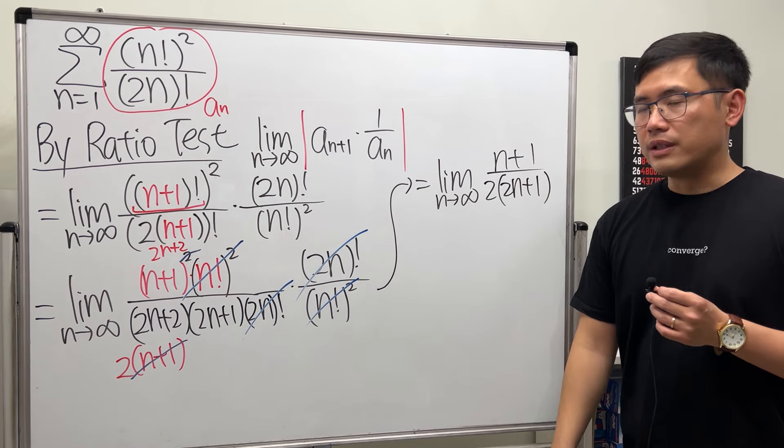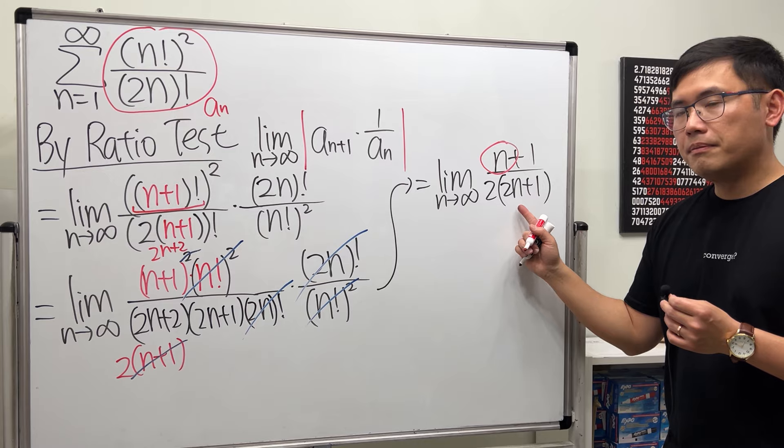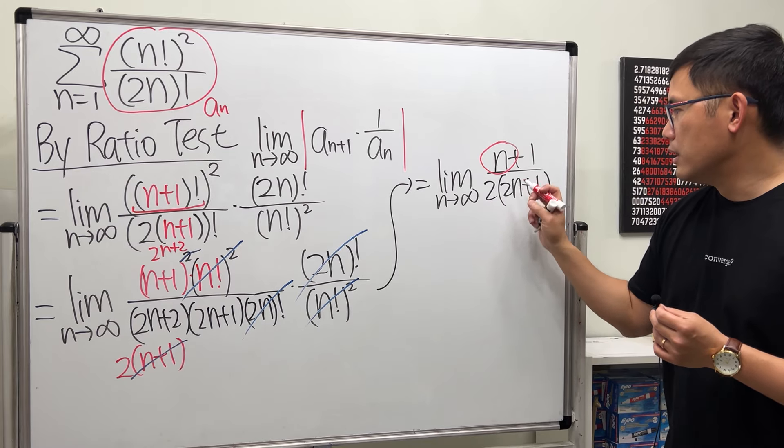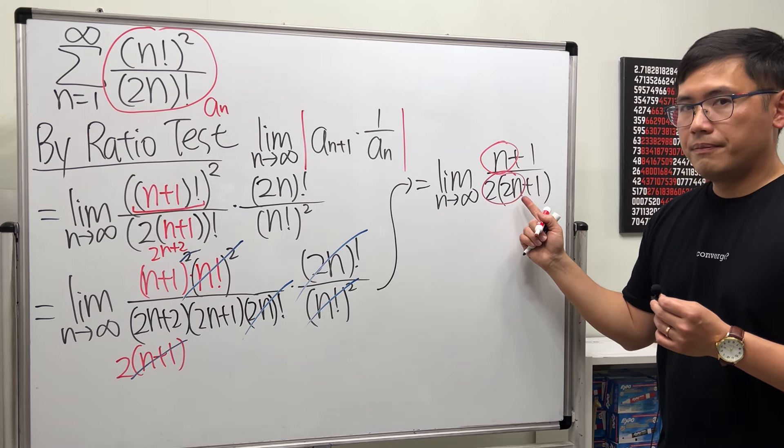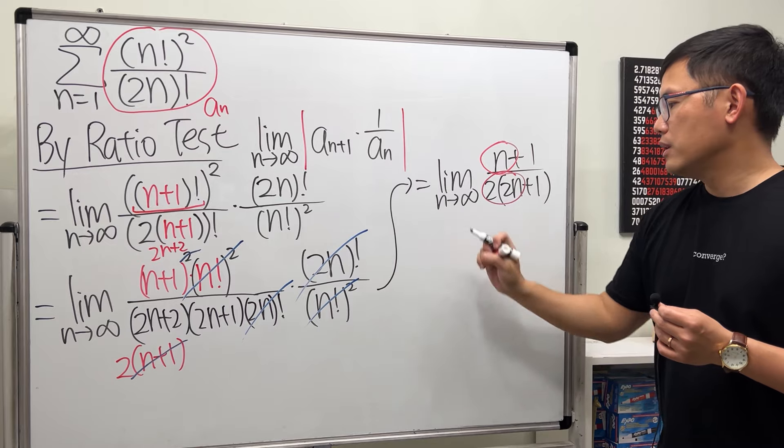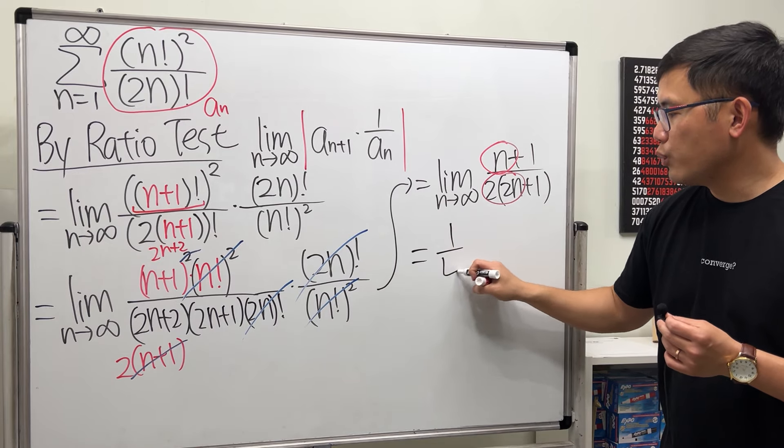As n goes to infinity, we just care about the dominating part. On the top, which is n; on the bottom, we care about 2n, but don't forget to multiply by this 2, so that's 4n. n over 4n—we can say that's just equal to 1 over 4.